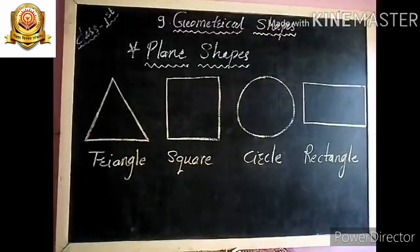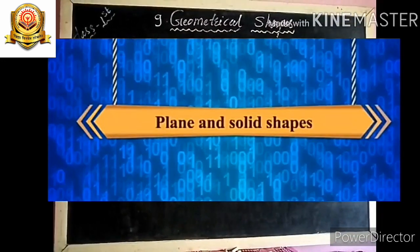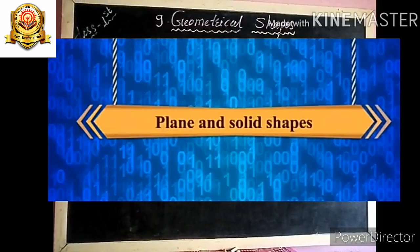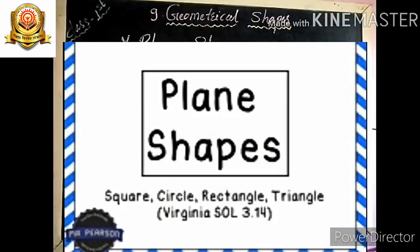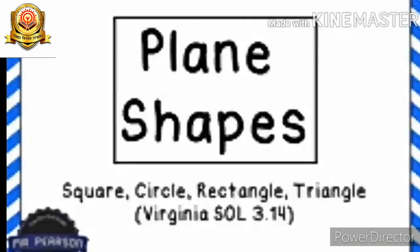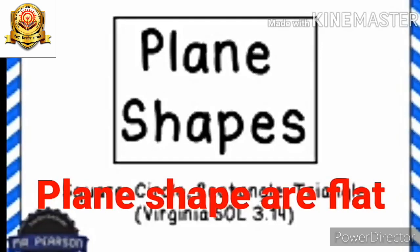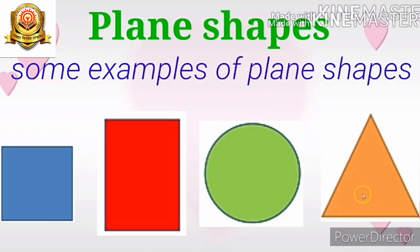In geometry there are two types of shapes: plane shapes and solid shapes. We will first see plane shapes and then solid shapes. What is meant by plane? Plane means a flat surface, such as the surface of the blackboard. Plane shapes are those shapes that are flat.